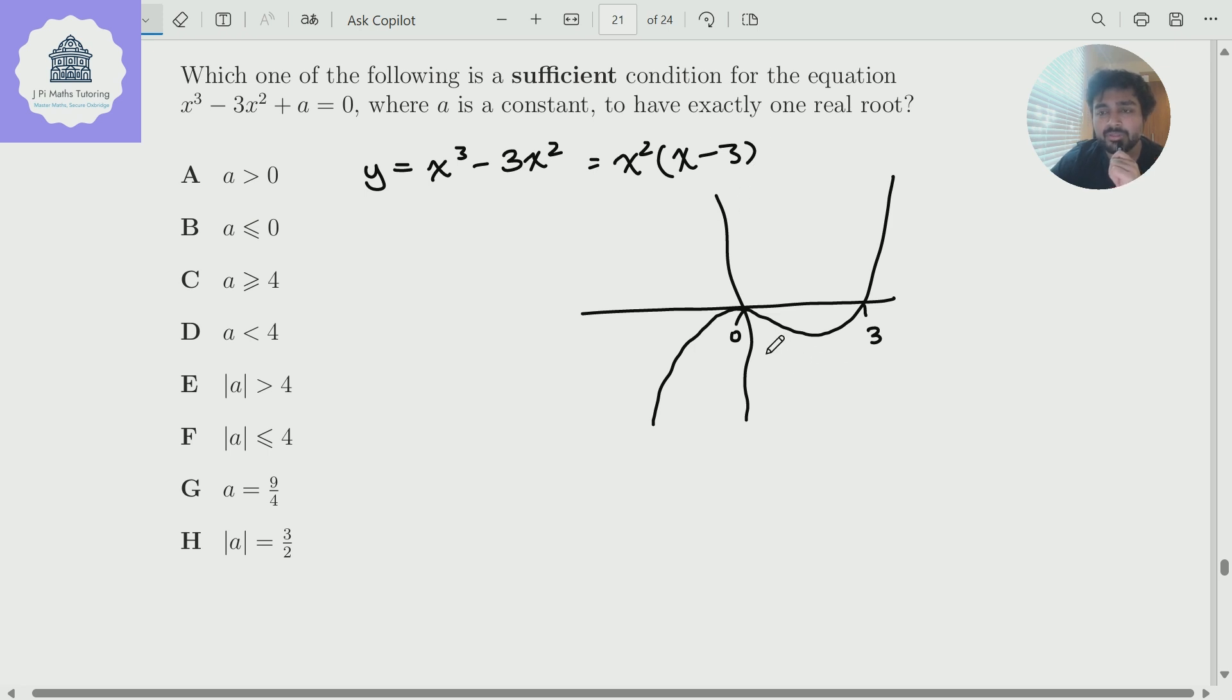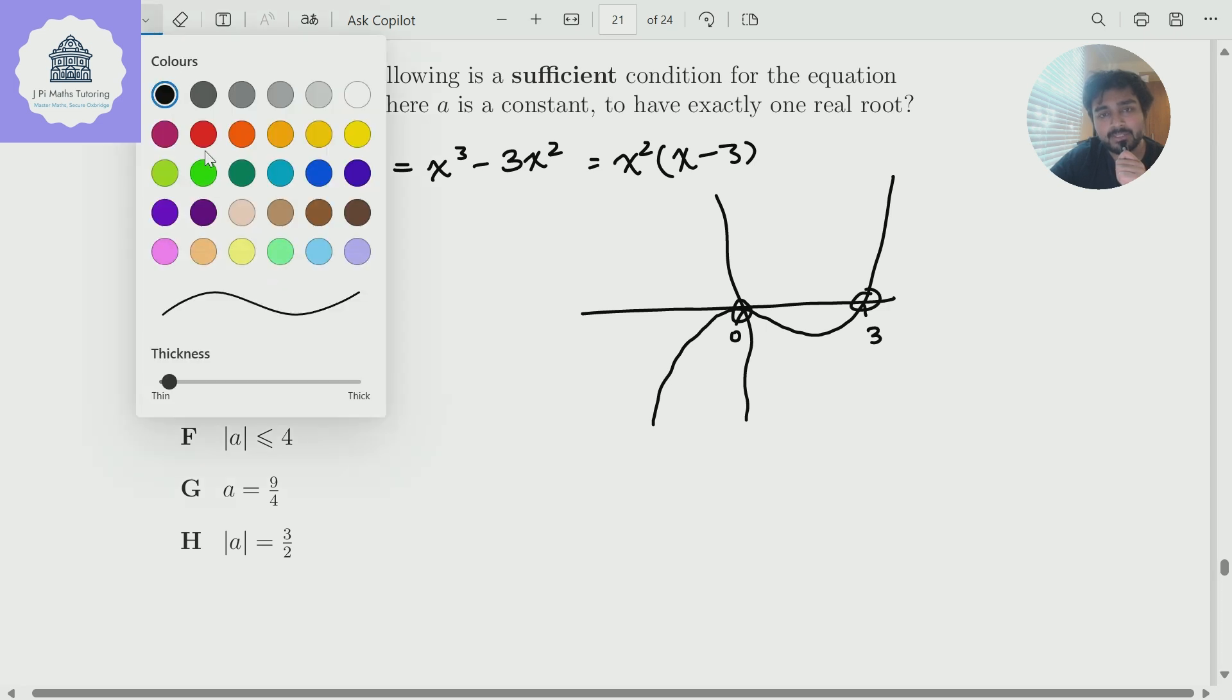Now if I take in the plus a aspect of this equation, that's just going to correspond to this cubic being translated up or down by a. So if a was 7, I'd move this cubic graph up 7 units. And now we want this cubic to have one real root. Well, how many does it have at the moment? Well, it has two. So one at zero, one at three. But we want it to only have one. So we can see here, there's two things that we could do.